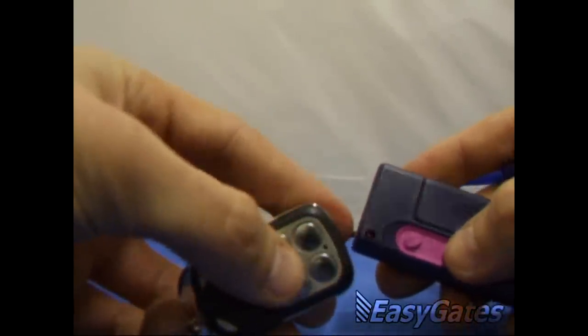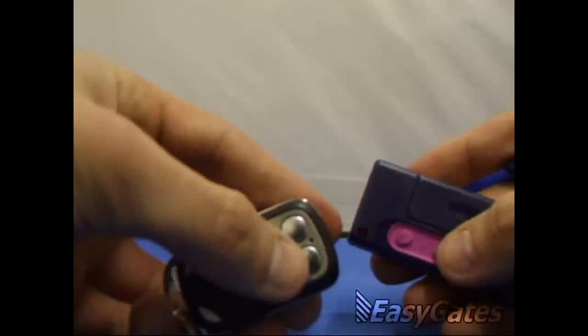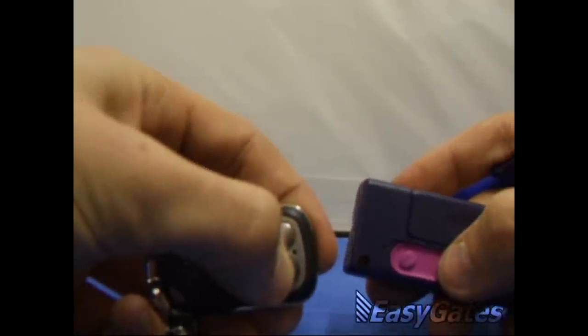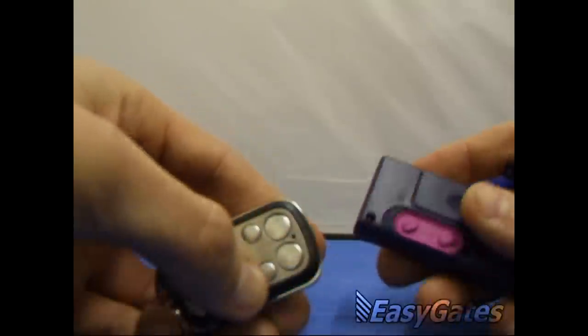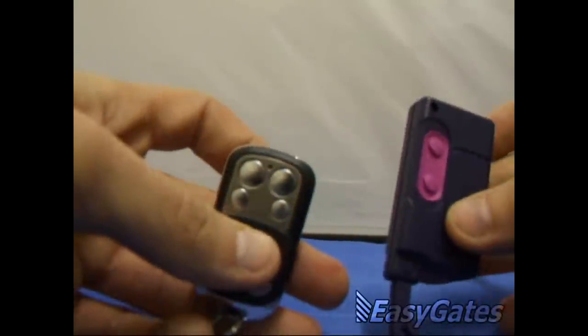Repeat the process for any other buttons. For instance, the second one, and that is now flashing again. That's basically a simple guide on how to program your cloning remote.